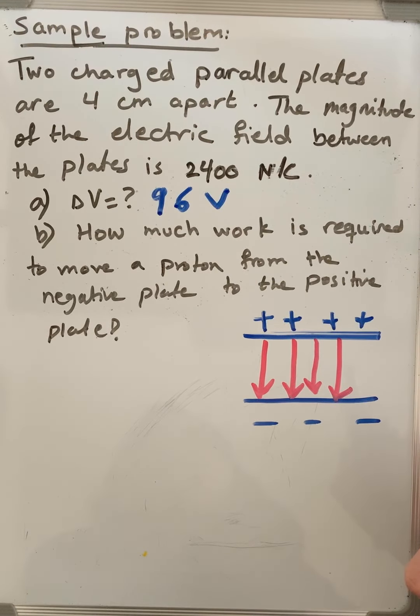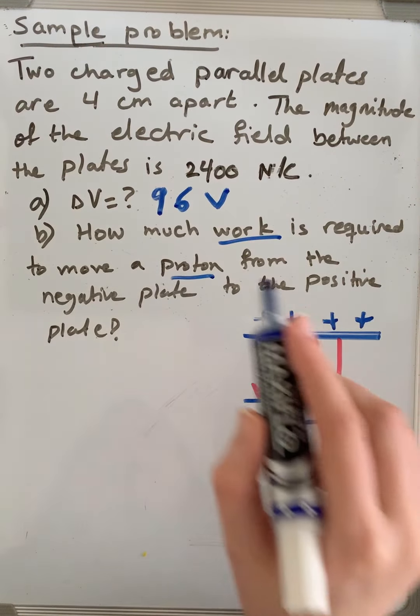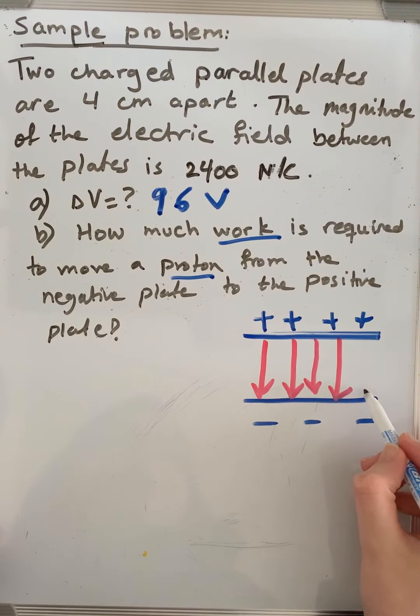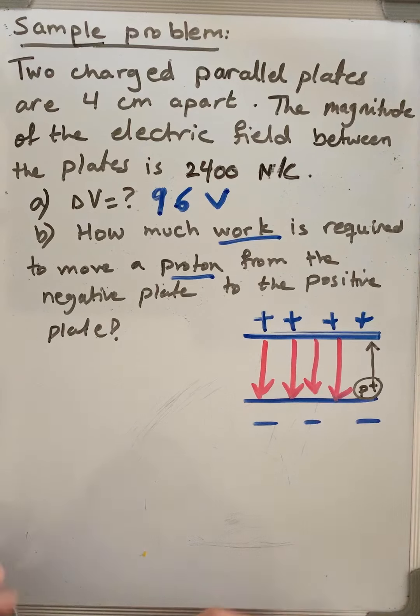In B, they want us to calculate the work required to move a proton from the negative plate to the positive plate. Let's imagine here we have a proton, which is a positive charge, and we want to move it toward the positive plate, so opposite to the field. This will require some work.